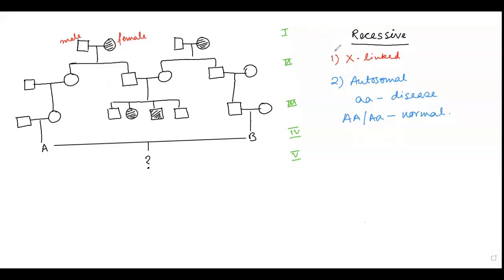Recessive traits are of two types: the first one is X-linked recessive, and the second one is autosomal recessive.